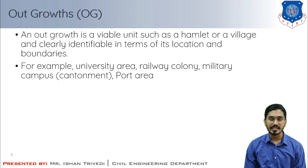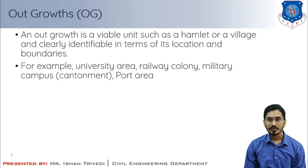The outgrowth of a town should possess urban features in terms of infrastructure and amenities such as paved roads, water supply, drainage, electricity, post office, educational institutions, banks, and medical facilities.